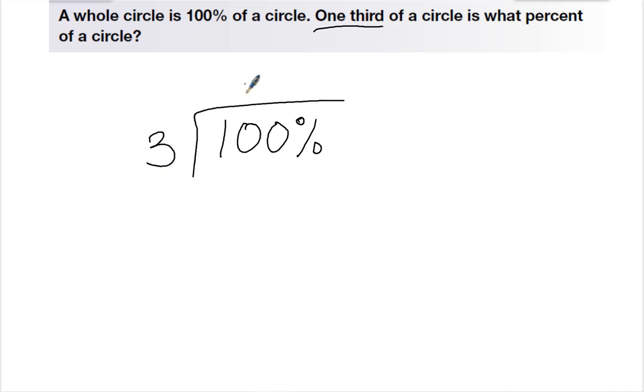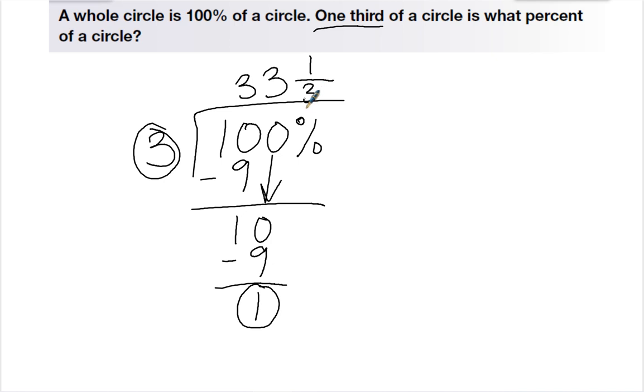3 goes into 10, 3 times. 3 times 3 is 9. Subtract. 1, bring down the 0. 3 goes into 10, 3 times. 3 times 3 is 9. Subtract. 1 left over. So I have 33. I put my fraction. The numerator is the remainder. The denominator is what I'm dividing by. So my answer is 33 and 1 third percent.